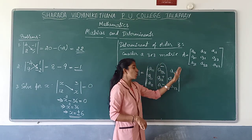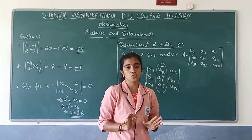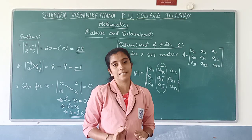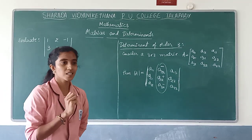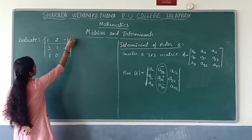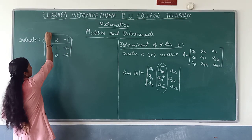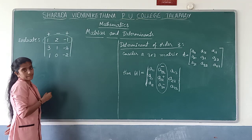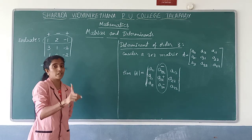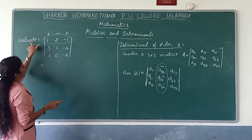Along column 3, row 3 you can do similarly. Most of the time we perform along row 1. If the number of zeros is more in a particular row or column, we prefer to expand along that row or column — it simplifies the calculation. But we always suggest performing along row 1.